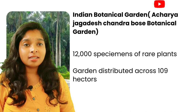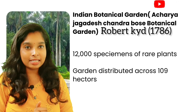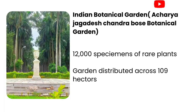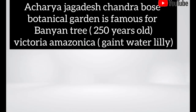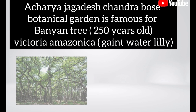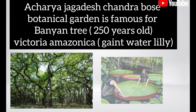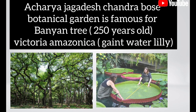The Indian Botanical Garden was established by Robert Kyd in the year 1786. It is famous for its diverse collection of plants with over 12,000 specimens distributed across 109 hectares. It is also famous for its banyan tree, which is 250 years old, and Victoria amazonica — the giant water lily — known for its largest leaf, on which people can sit.